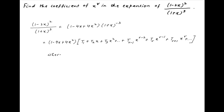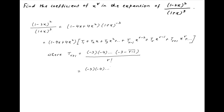With the general term in the expansion of (1 plus x) raised to the power minus 3, denoted by t_{r+1}, given by (minus 3)(minus 4)... times (minus 3 minus r plus 1) divided by r factorial, which equals (minus 3)(minus 4)...(minus 2 minus r) divided by r factorial. Taking minus sign common from all components of the numerator, we get (minus 1) raised to the power r times 3 times 4 times 5 and so on till (r plus 2), divided by r factorial.